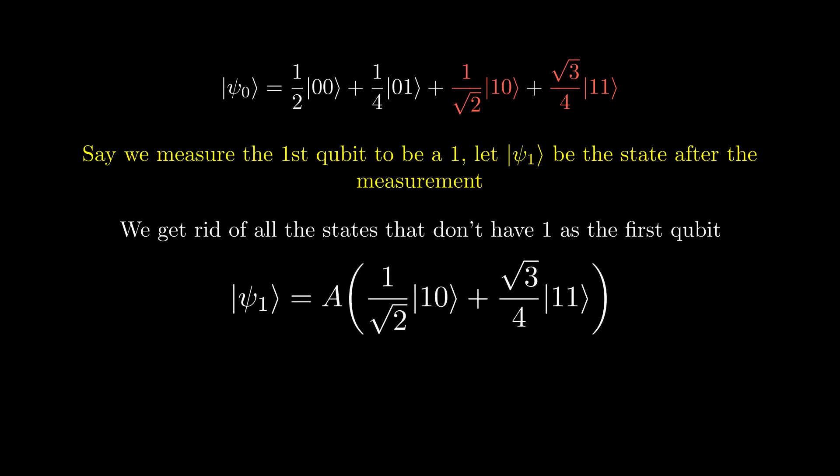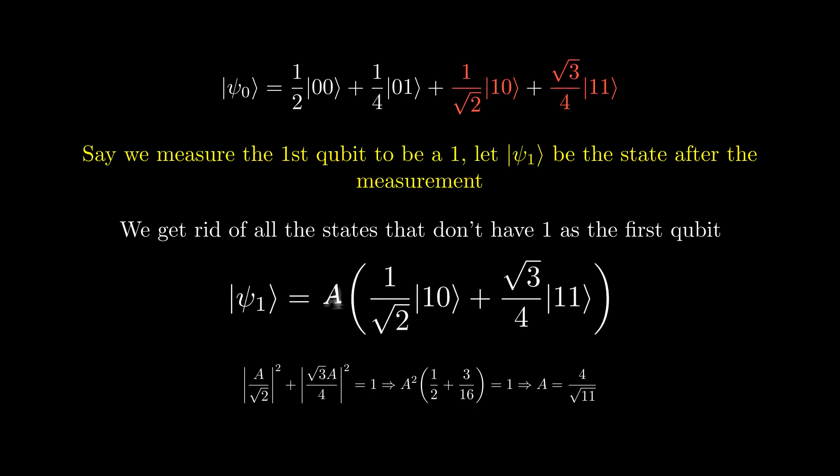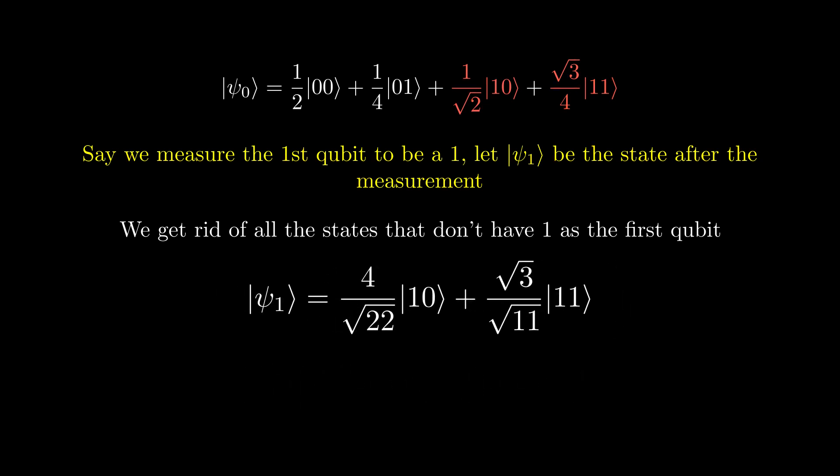Now we can normalize the state by using the identity that the probabilities must add up to 1. This gives us values for a. So if we measure the first qubit to be 1, the state collapses to this state.